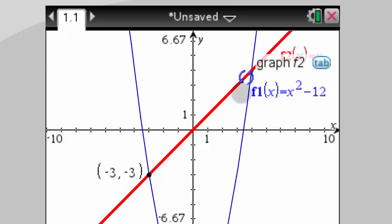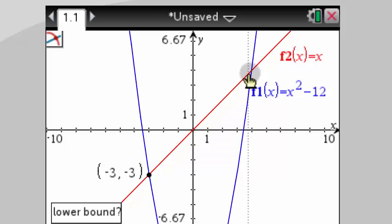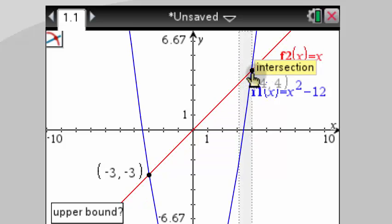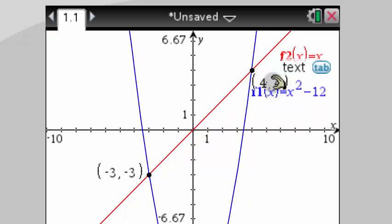So I want to search over here. So I hit menu, analyze graph, intersection. So I want to tell it to go search from here, left of that point, to sweep right of the point. So you're telling the calculator where to search. And you get that point.